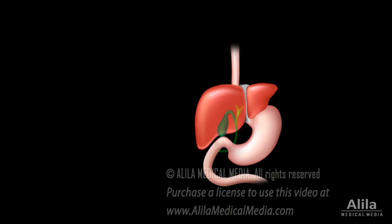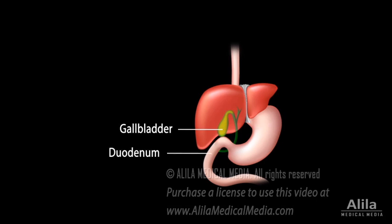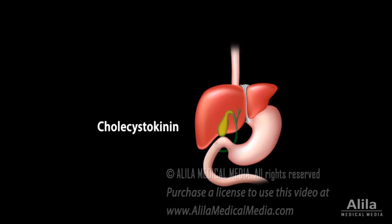Bile flows into the small intestine to aid with digestion. Outside mealtimes, it is diverted to the gallbladder for concentration and storage. Following food intake, the presence of fats and proteins in the duodenum — the first segment of the small intestine — stimulates the secretion of the enteric hormone cholecystokinin. Cholecystokinin induces the gallbladder to contract and release bile to the small intestine.